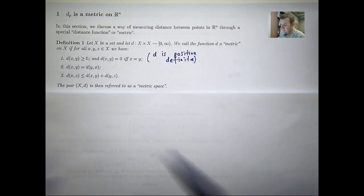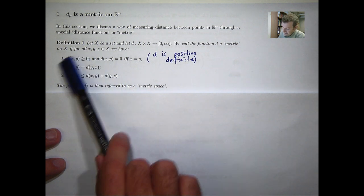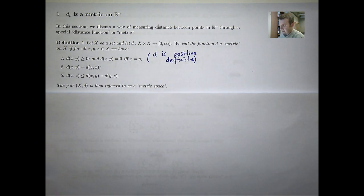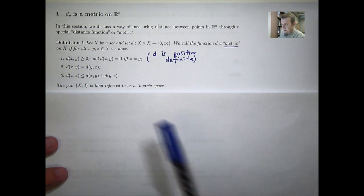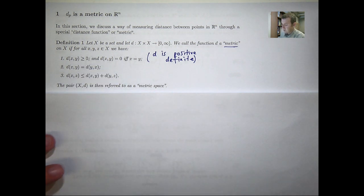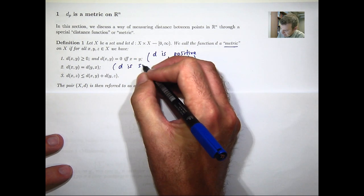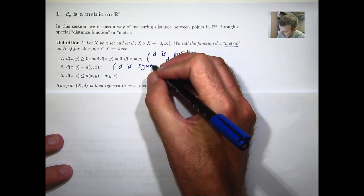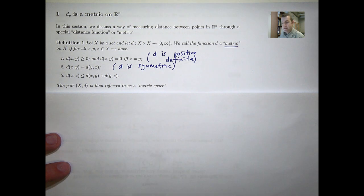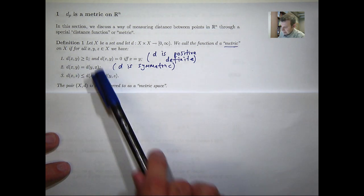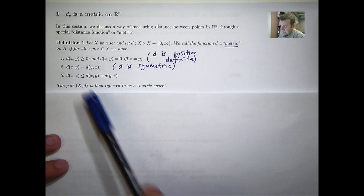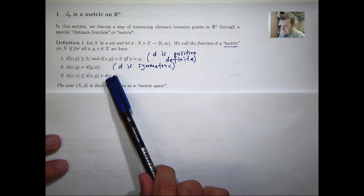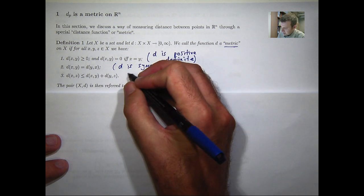So d is zero when x and y are equal to each other and positive everywhere else. The second desirable quality of this distance function is that it's symmetric — the distance between x and y is the same as the distance between y and x. Lastly, if we have three elements x, y, and z, then the distance from x to z is less than or equal to the distance from x to y plus the distance from y to z. This is a general triangle inequality.